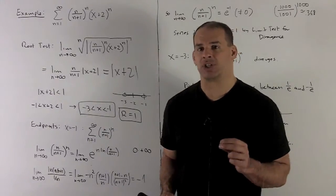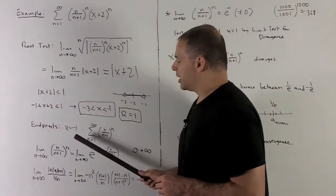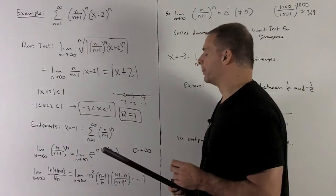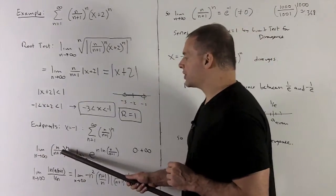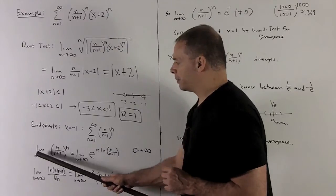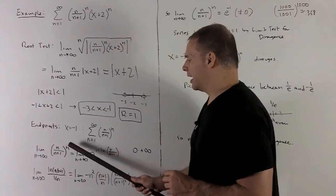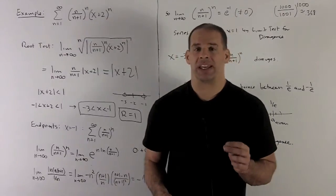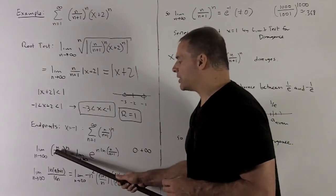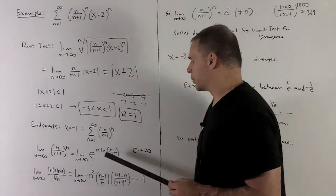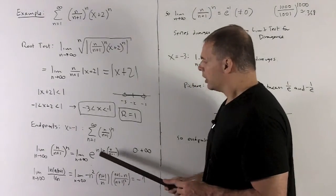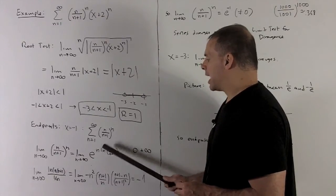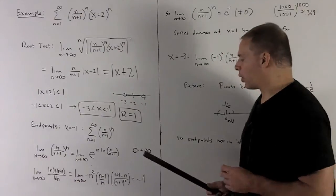It diverges by the limit test for divergence — we show the limit of the sequence goes to a number that's not 0, meaning the series can't converge. This is tricky: as n goes to infinity, we get the indeterminate form 1 raised to the infinite power. I'll deal with this using e to the natural log: write n/(n+1) as e to the natural log of n/(n+1), raised to the n. As n goes to infinity, natural log of n/(n+1) goes to natural log of 1, which is 0. So we get another indeterminate form: 0 times infinity.